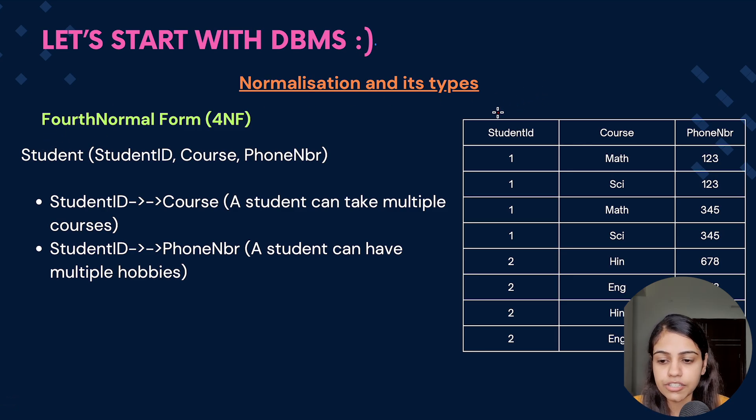Consider that there is a relation Student, which has StudentID, Course, and PhoneNbr. Now one particular student can have multiple courses, one particular student can also have multiple phone numbers. So let's see from this relation.